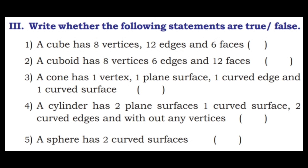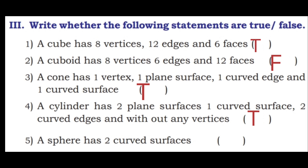Third question: write whether the following statements are true or false. First: a cube has 8 vertices, 12 edges, and 6 faces — true. Second: a cuboid has 8 vertices, 6 edges, and 12 faces — this is false, as it has 12 edges not 6. Third: a cone has 1 vertex, 1 plane surface, 1 curved edge, and 1 curved surface — true. Fourth: a cylinder has 2 curved edges and no vertices — true. Fifth: a sphere has 2 curved surfaces — false, it has only one face.